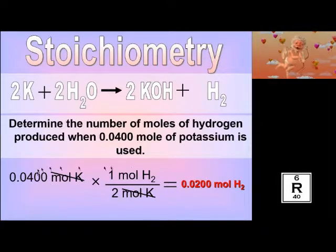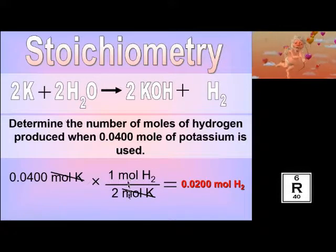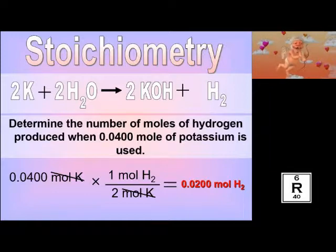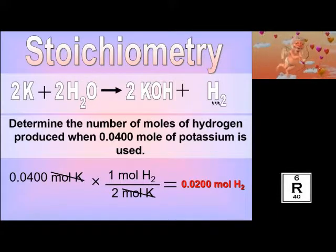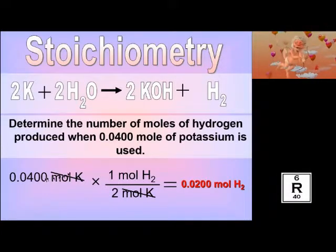That would be the answer. This is stoichiometry — it's using a balanced equation to convert from one thing into another thing. What makes stoichiometry difficult for students is getting to this situation. This is a mole-to-mole relationship — I cannot stress enough, this is the most important part of today's lesson. Two moles of potassium will produce one mole of hydrogen. This is NOT a mass-to-mass relationship. This does not say that two grams of potassium will create one gram of hydrogen. It is a molar relationship.